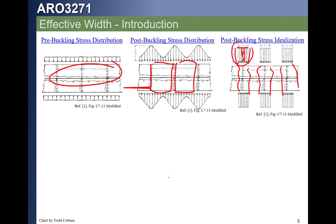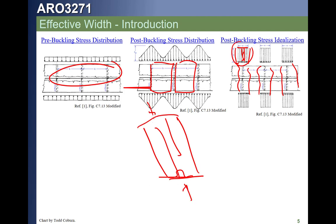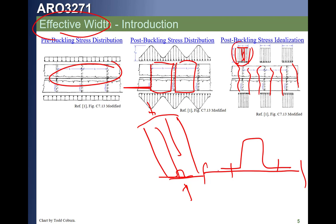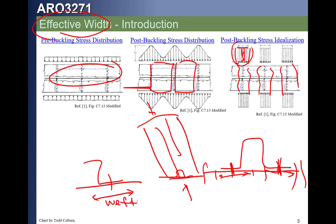The idealization is: each stringer carries load as the stringer plus some effective skin at its buckling load. Effective width of skin is about figuring out, for a given stringer, how much skin acts with it — and we ignore the rest. For a hat stringer attached here and here, we have an effective width on each side of the fastener. For a Z-stringer, the effective width is different. We can talk about total effective width per fastener or effective width per side (half) of the fastener.